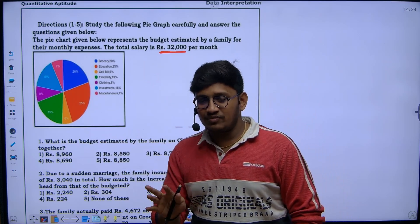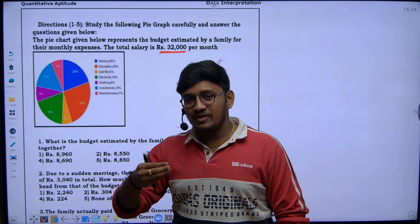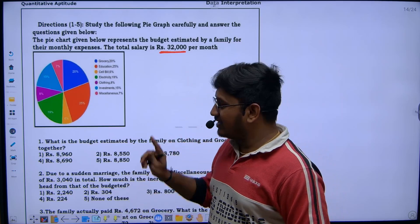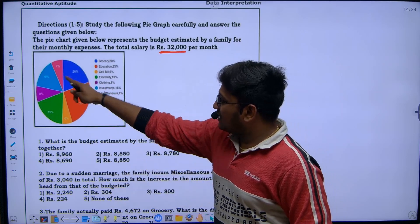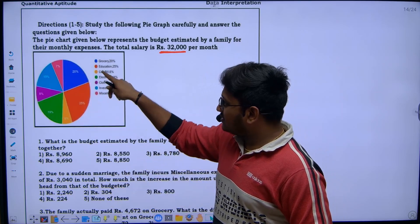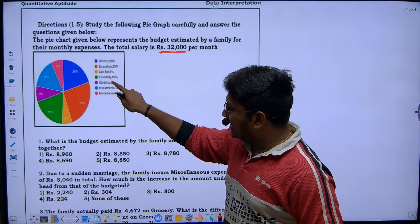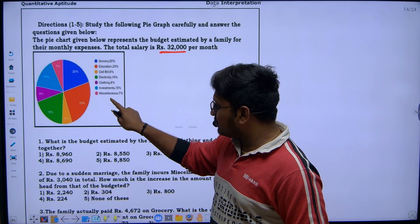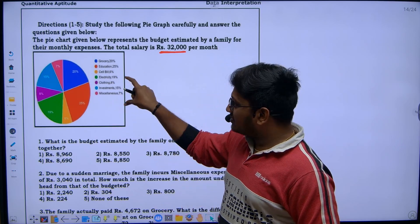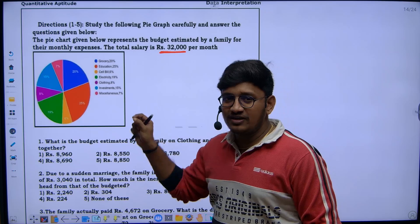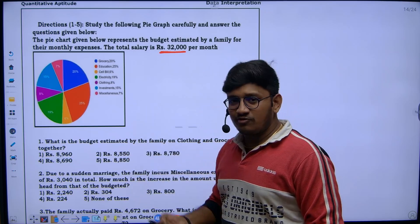Sometimes they may give data in terms of percentage, sometimes in terms of degrees — be clear about the values. Here, the pie chart represents the budget estimated by a family for their monthly expenses. The total salary is 32,000 per month. The different categories are: grocery, education, cell bill, electricity, clothing, investment, and miscellaneous expenses — all given in terms of some particular percentage. Now let's read out the first question.